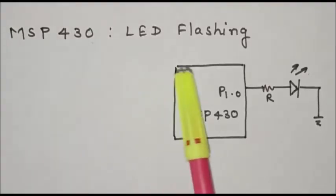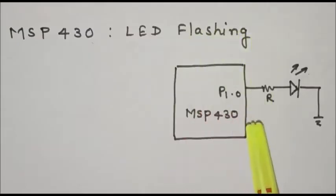So embedded C program to flash LEDs on the launchpad board of MSP430. LED is connected to pin P1.0. We'll write a program to flash the LED with some delay.